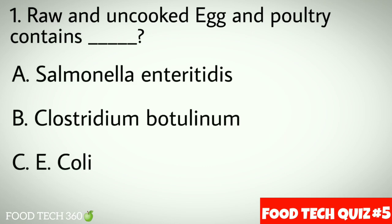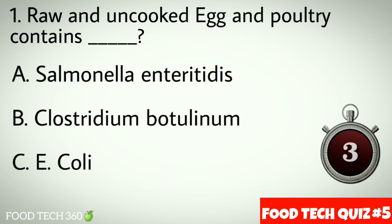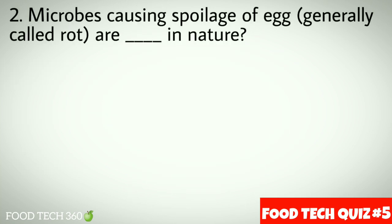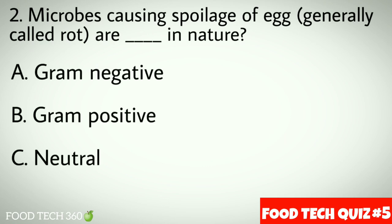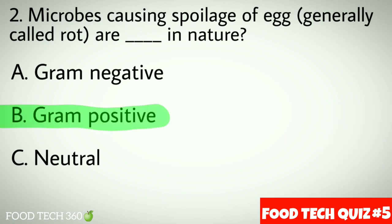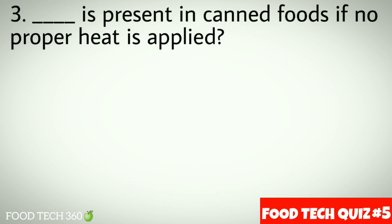Question number two: microbes causing spoilage of egg are dash in nature. Options: a) gram negative, b) gram positive, c) neutral. Correct answer: b) gram positive. Question number three: dash is present in canned foods if no proper heat is applied.